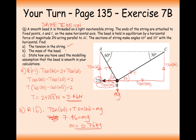Part C asks how I've used the modelling assumption that the bead is smooth. Since the bead is smooth, there is no friction between the bead and the string — that's why the tension is the same throughout the string. Have a go at plenty of questions from exercise 7b, especially those involving a string looped through a bead versus two different pieces of string attached to the same particle. Thanks very much for watching.